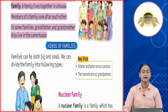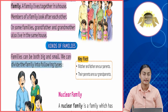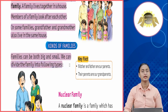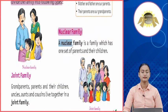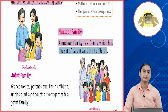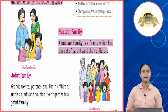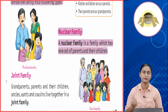Kinds of families. Families can be both big and small. We can divide the family into the following types. Families chhoti bhi ho sakti hain aur badi bhi ho sakti hain. Nuclear family: a nuclear family is a family which has one set of parents and their children. Nuclear family ek chhoti family hai jis mein ek hi set of parents — yani mammi aur papa — aur unke bachche saath mein rehte hain.